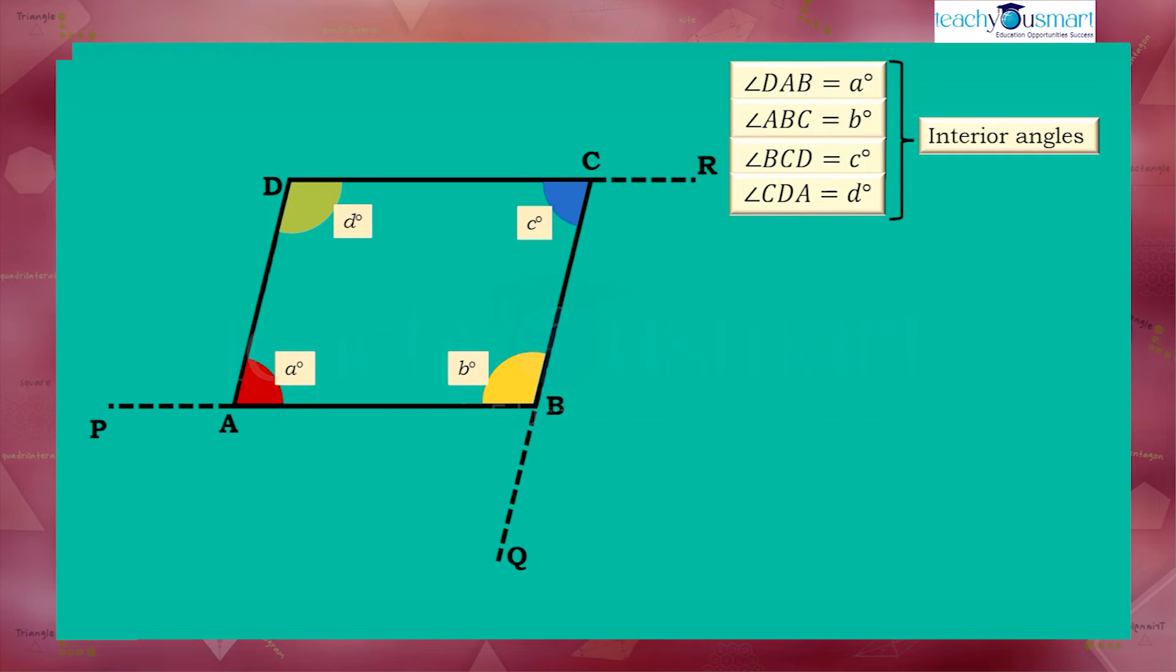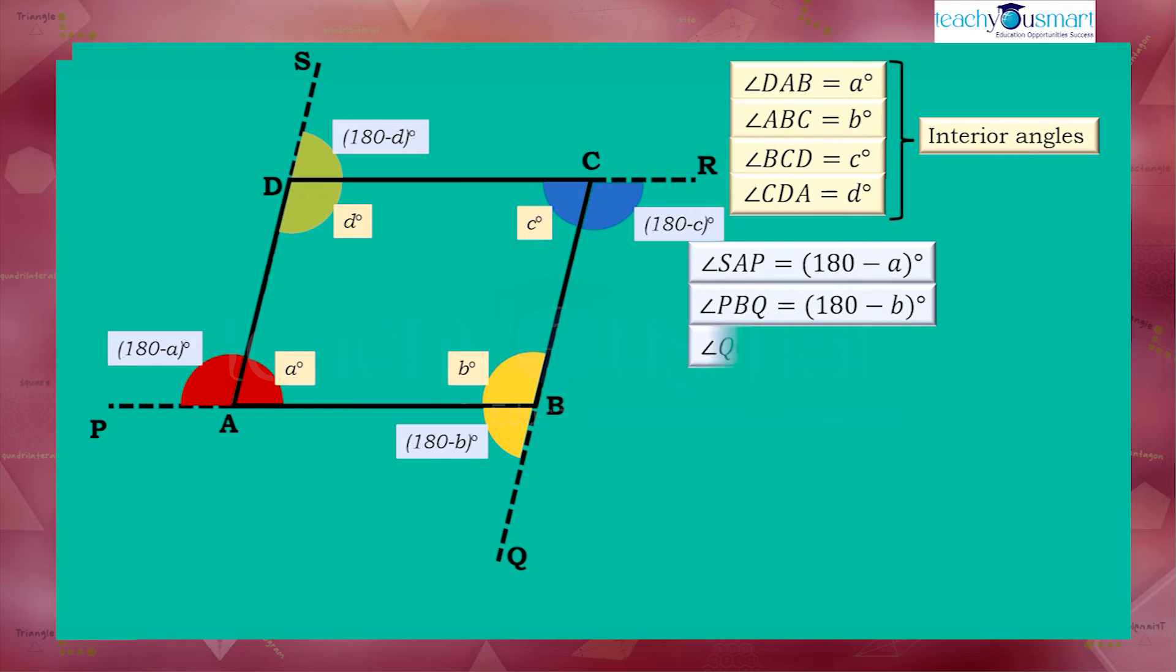And the corresponding exterior angles will be 180 minus A, 180 minus B, 180 minus C, and 180 minus D respectively.